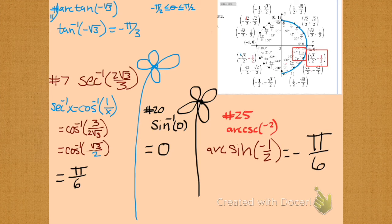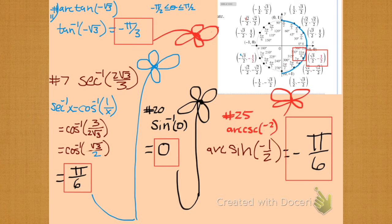If we wanted that in degrees, that would be minus 30. Box and flower. Box and flower.